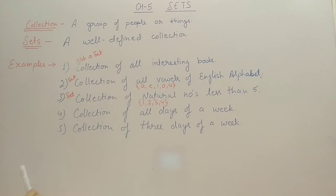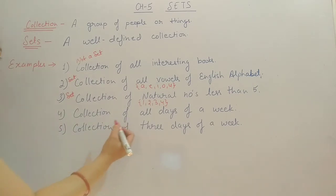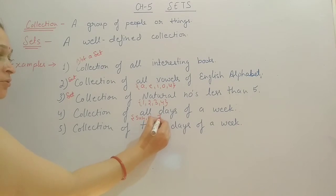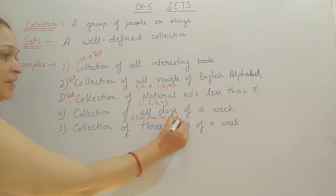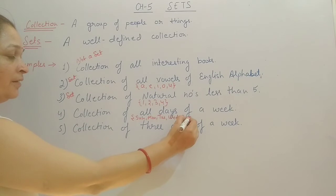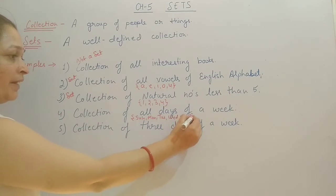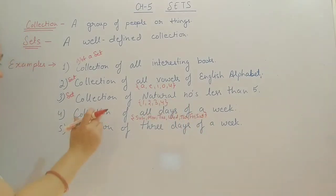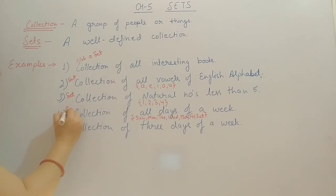The fourth example is the collection of all days of a week. All days of a week means Sunday, Monday, Tuesday, Wednesday, Thursday, Friday, and Saturday — seven days. So this fourth example is also a set.